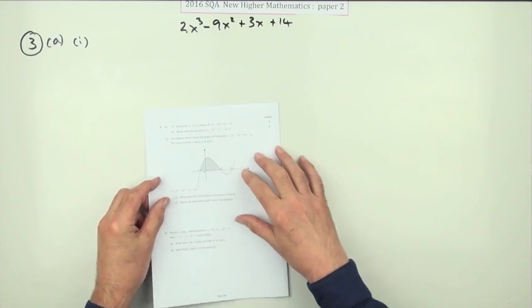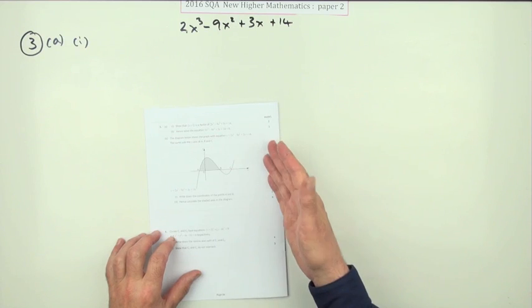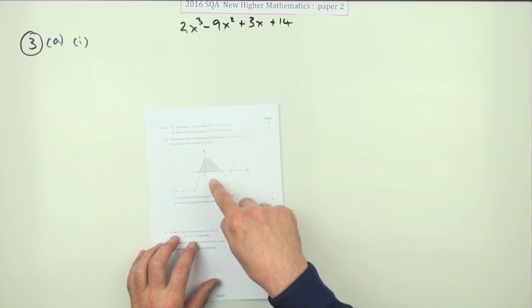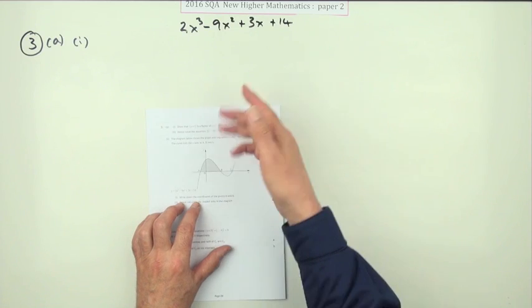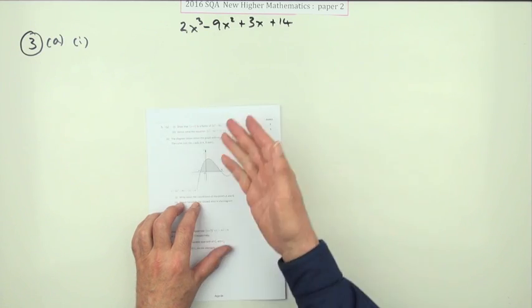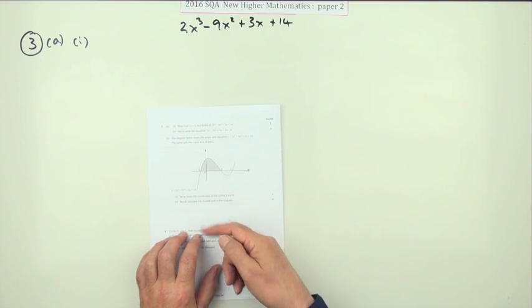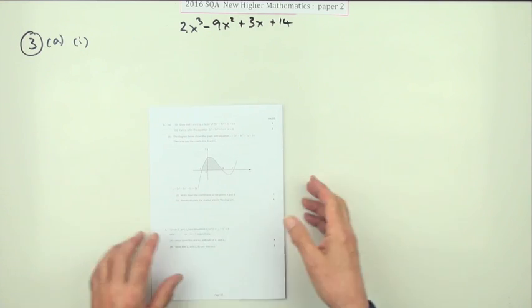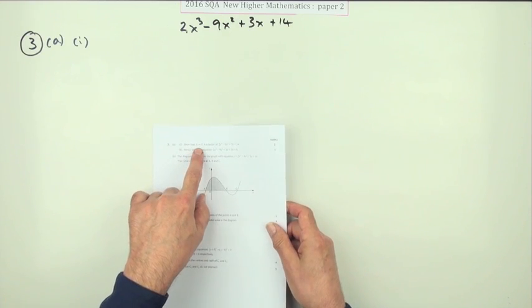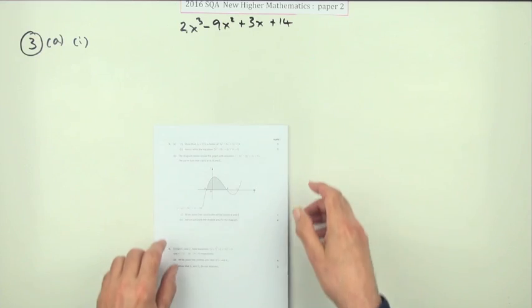Number three then, from the second paper of the 2016 New Higher 10-mark question, fairly straightforward. The first part: show this is a factor and fully factorize. The second part: area under a curve. So what's the first bit? Show that x plus 1 is a factor of this.